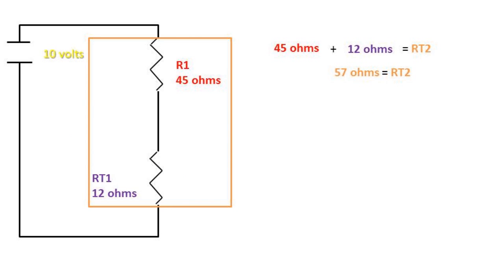Now our circuit is simplified to a series circuit with resistance one of 45 ohms and resistance total one of 12 ohms. Being these resistors are in series, we can add the resistances together to get 57 ohms for the resistance of the total circuit, resistance total two.